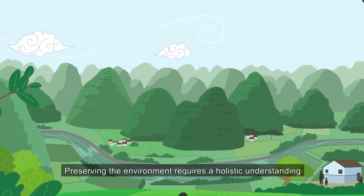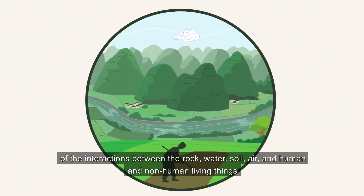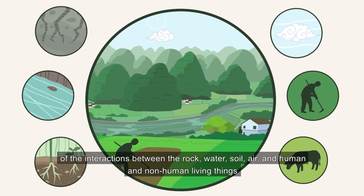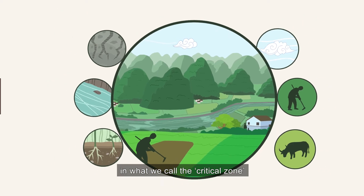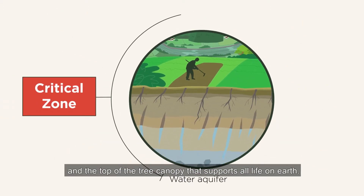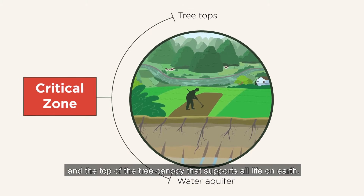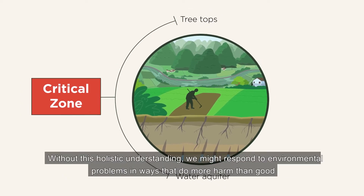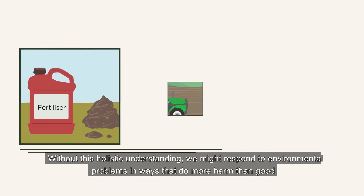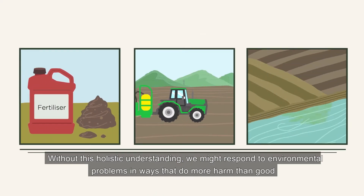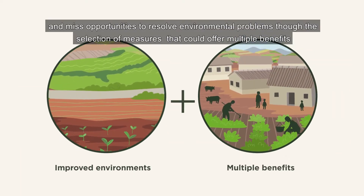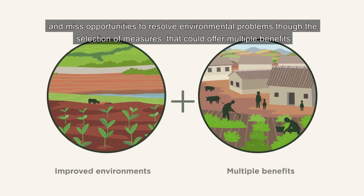Preserving the environment requires a holistic understanding of the interactions between the rock, water, soil, air and human and non-human living things in what we call the critical zone – the area between the bottom of the water aquifer and the top of the tree canopy that supports all life on Earth. Without this holistic understanding, we might respond to environmental problems in ways that do more harm than good, and miss opportunities to resolve environmental problems through the selection of measures that could offer multiple benefits.